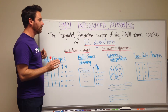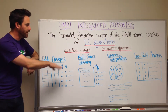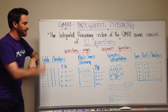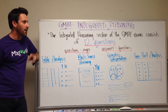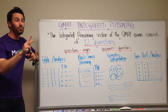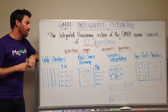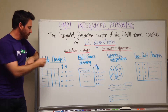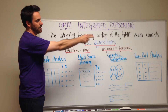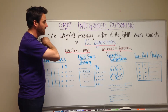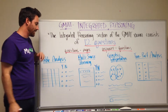You're going to have four question types: table analysis, multi-source reasoning, graphic interpretation, and two-part analysis. You're going to have about three of each of these in the section — three table analysis, three multi-source, three and three — to make up 12 pages, or 12 questions.